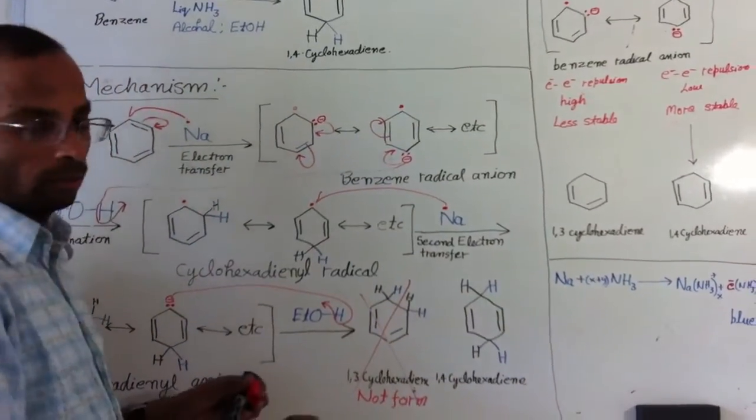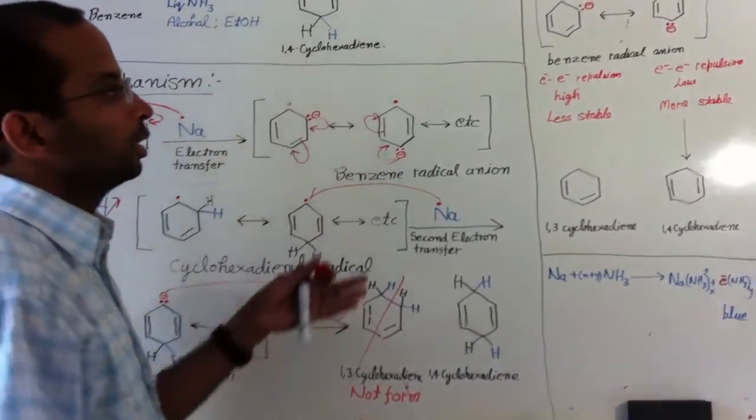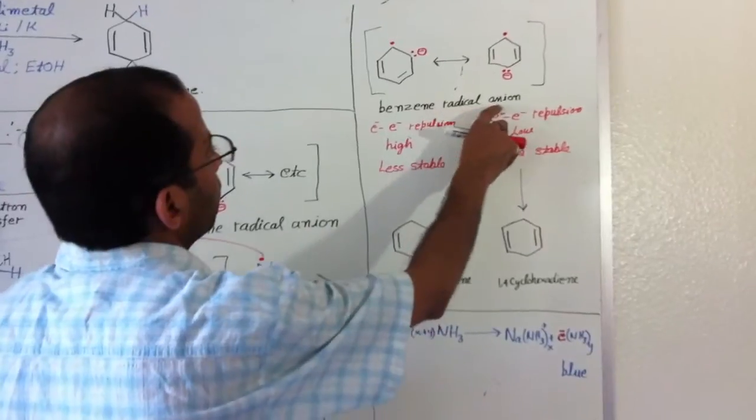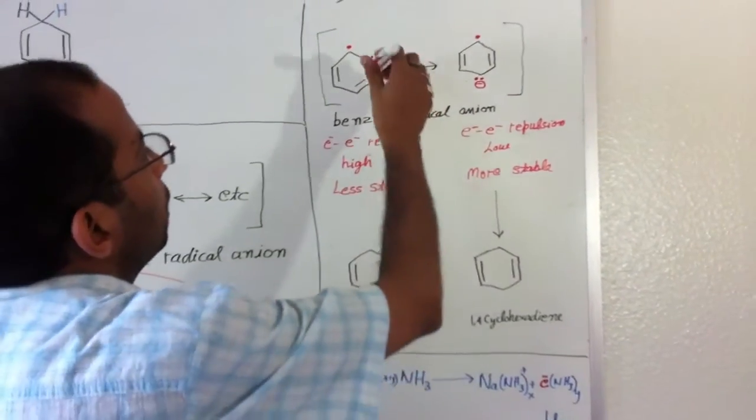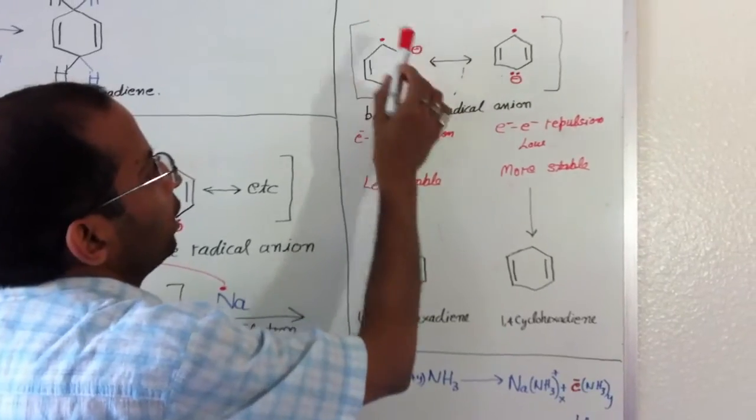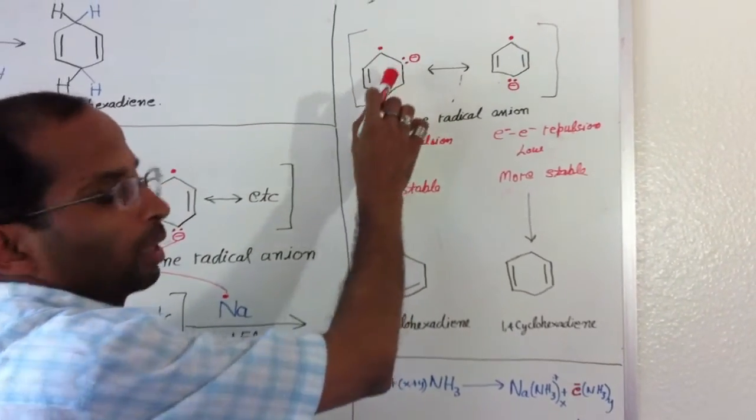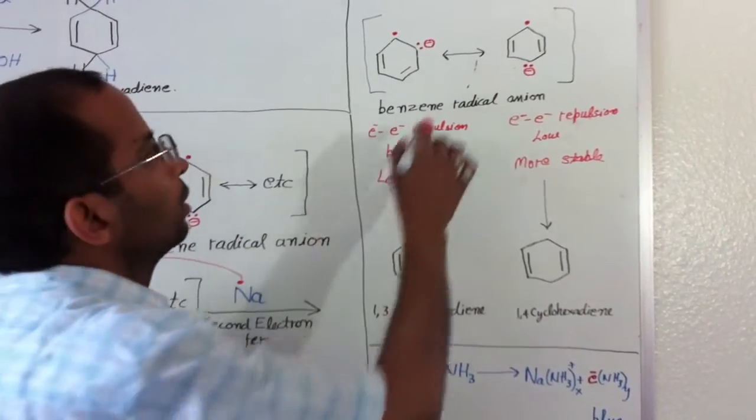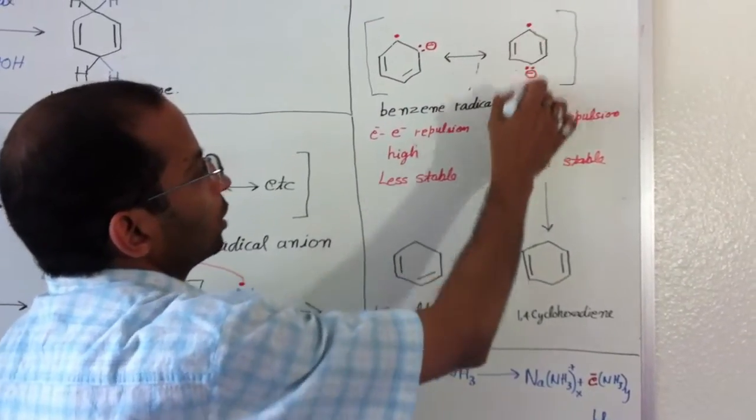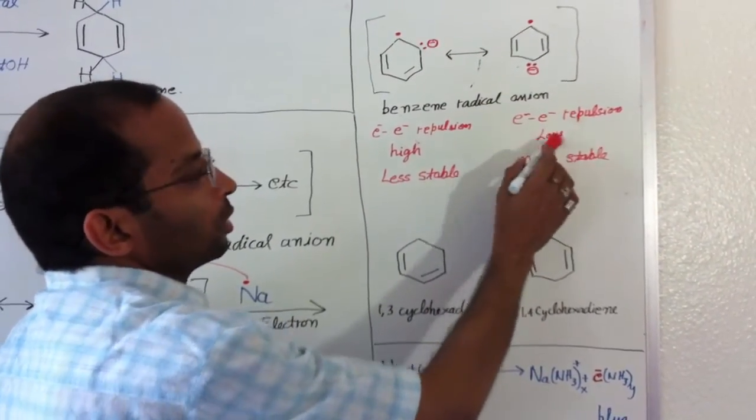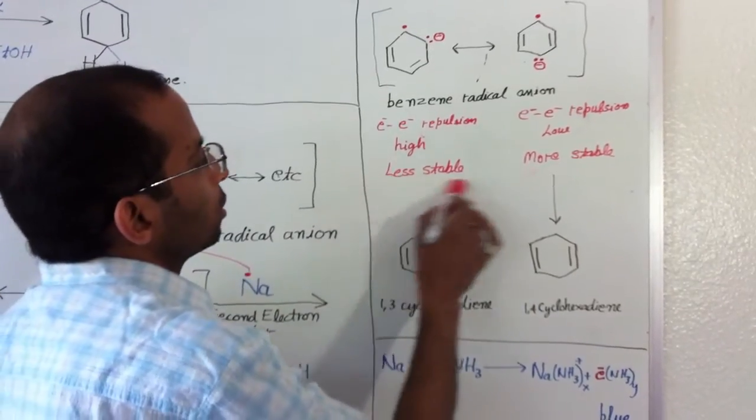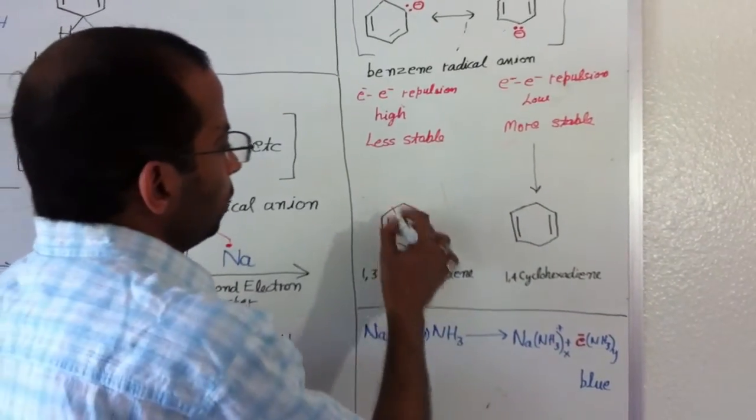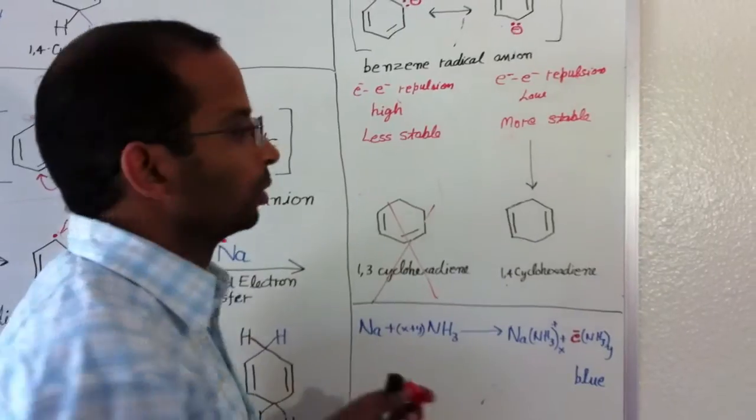This molecule doesn't form - why is it not stable? According to the benzene radical anion, if you see these two mesomeric structures, the radical electron and the anion are pretty close to each other on neighboring carbons. That is why electron-electron repulsion is very high. So it moves to the fourth position where electron-electron repulsion is comparatively low. This structure is more favorable, and in result, you will see only 1,4-cyclohexadiene formation takes place.